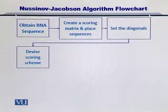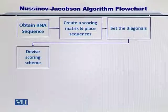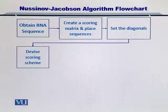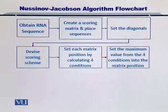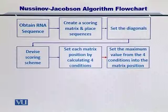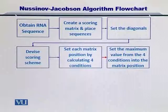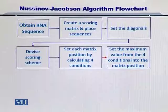For that you will need to devise a scoring scheme. The scoring scheme for the NJ algorithm comprises of looking at the bottom, the left, the diagonal, as well as the two rows beyond the left and the bottom elements. You set each matrix position by looking at the maximum from these four scoring positions. You can look at it in detail with the matrix and then compute and complete it.